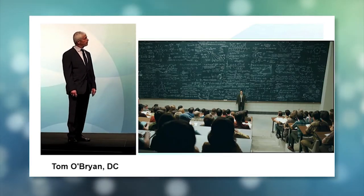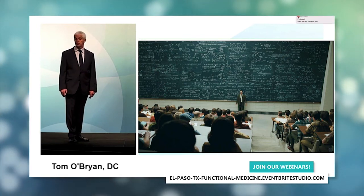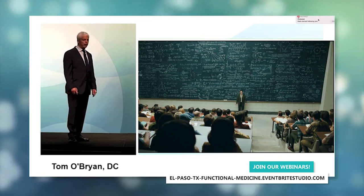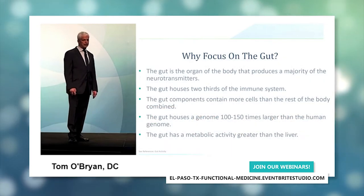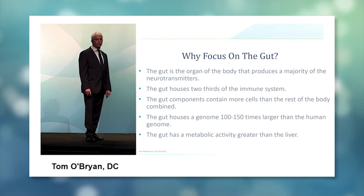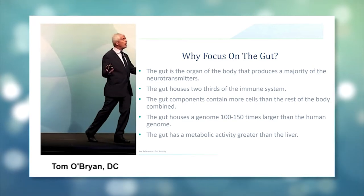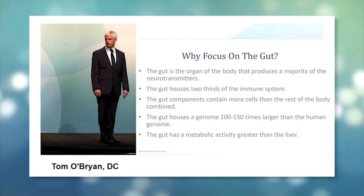This is the first talk where we're going to dig into some of the science. We're going to do a little bit of a deep dive here. Why are we focusing on the gut? The gut is the organ of the body that produces a majority of the neurotransmitters. It houses two-thirds of the immune system.